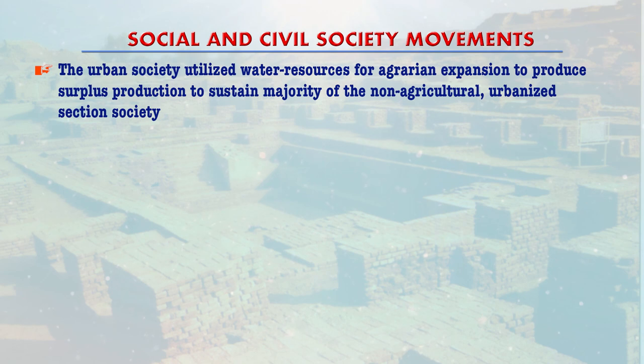Human society in prehistoric times — both in the Paleolithic old stone age and the Mesolithic or middle stone age — lived through hunting and gathering. The Neolithic age, or new stone age, witnessed the beginnings of subsistence agricultural activities and emergence of villages. As subsistence agriculture expanded into surplus agriculture, we witness the beginnings of urbanization and the emergence of cities. The urban society utilized water resources for agrarian expansion to produce surplus production.